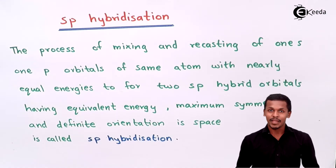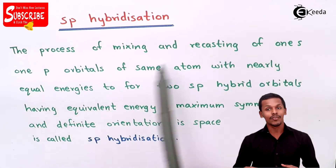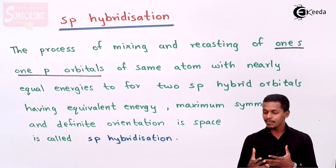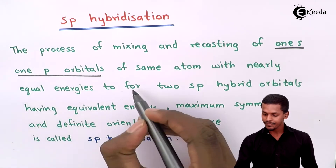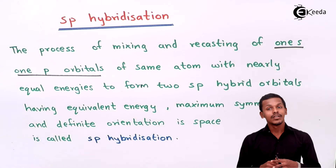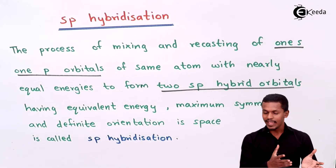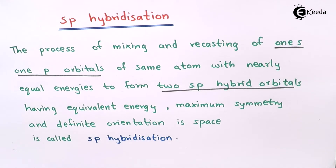Let us understand what is SP hybridization. Talking about the definition first: it is the process of mixing and recasting of 1S and 1P orbital of the same atom with nearly equal energy to form 2 SP hybrid orbitals. As we have discussed earlier, the hybrid orbitals that are formed will have equivalent energy with maximum symmetry and a definite orientation in space.